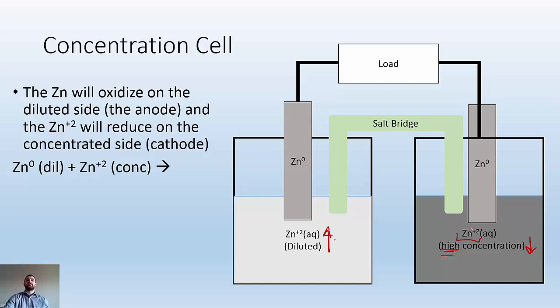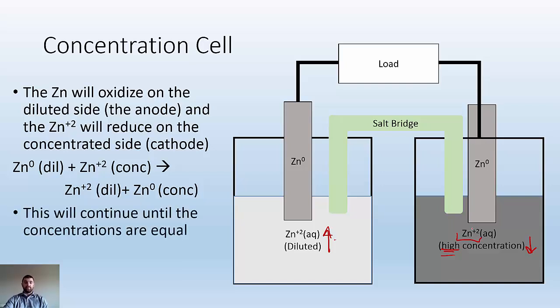Zinc on the diluted side plus zinc ion on the concentrated side is going to give us zinc ion on the diluted side and zinc 0 on the concentrated side. This is going to continue until the concentrations are equal because once they're equal, there's no more diffusion, no more motivation for them to keep going.